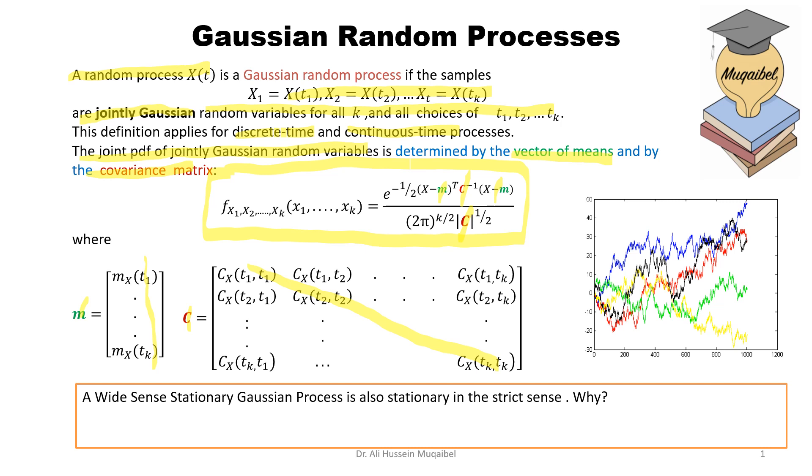The reason is that Gaussian process is fully defined by the mean and the covariance. So if they are stationary, everything else is going to be stationary. So once it's wide-sense stationary, it's also stationary in the strict sense, or strict-sense stationary.